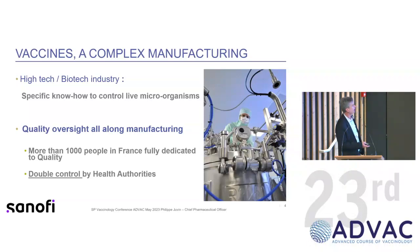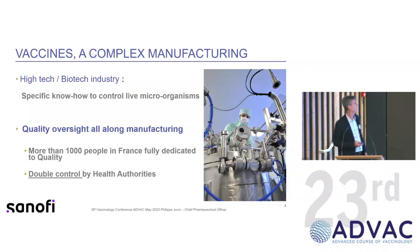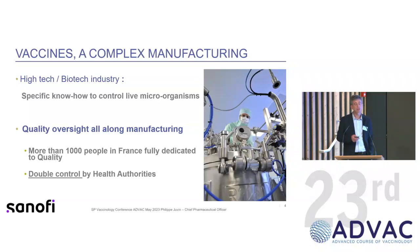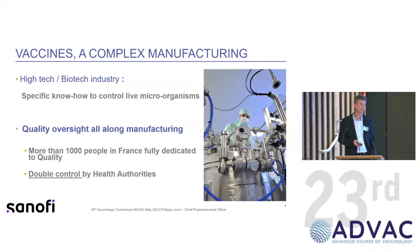Specific know-how and quality oversight are required. There is quality control, but also quality assurance — a list of preventive requirements put in place to prevent issues and guarantee product quality. To perform this in our three factories in France, there are more than 1,000 people dedicated totally to quality. In addition to all these measures, there is independent, redundant testing and release by health authorities.